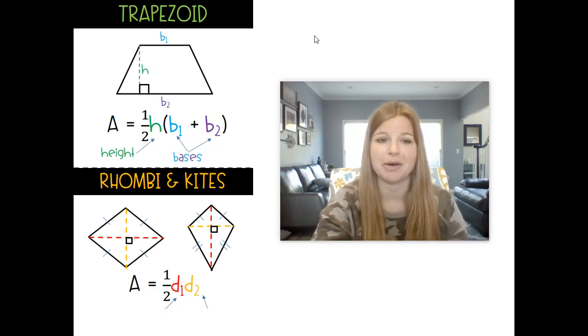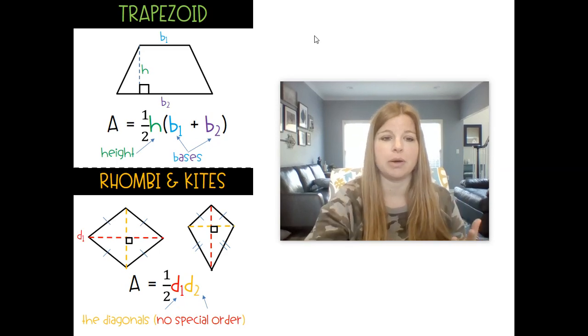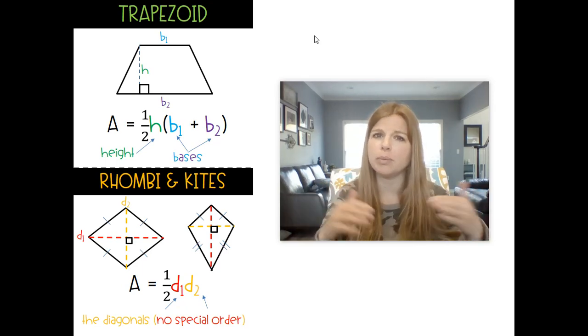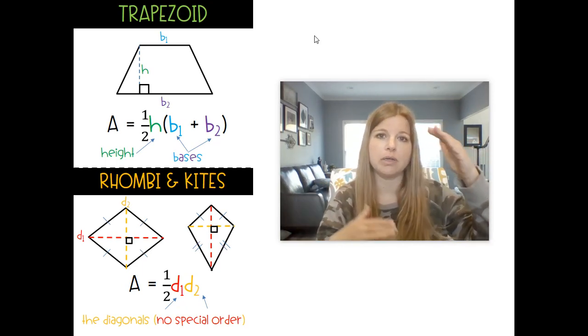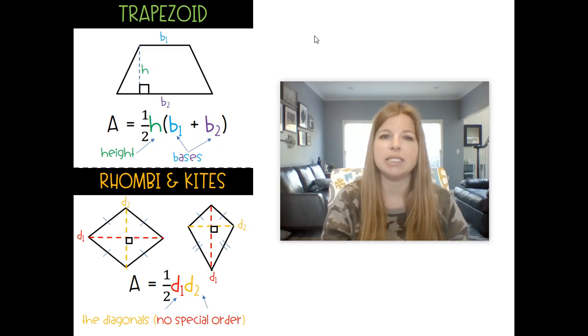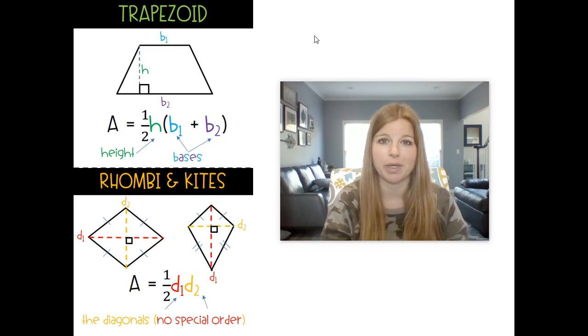For a rhombus or a kite, the formula is one half diagonal 1 times diagonal 2. Now the diagonals, there are no special order, so d1 and d2—d1 could be like the horizontal or the longer one, d2 could be the vertical or whatever it possibly be. In the other diagram I have d1 and d2 labeled in a different way. It really doesn't matter which one it is. You're just basically multiplying the diagonals together and then chopping that number in half and then you have your area for that. And it works with rhombus or a kite.